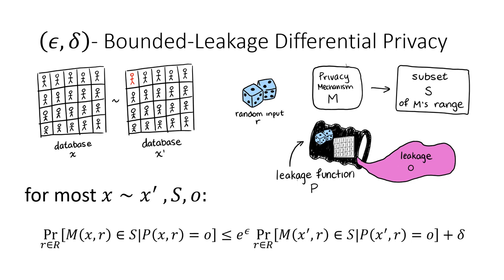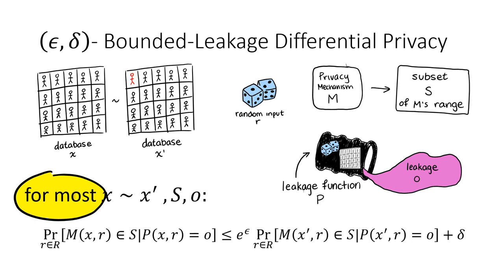We then require that for most pairs of neighboring databases, most subsets S of the range of M, and most leakages O, the probability that M would output some value within subset S given that the leakage was O is going to be similar whether we used database X or its neighbor X prime. Note that it's for most pairs, not all pairs, because we're working with conditional probabilities. If the probability that P outputted some O on a particular database was zero, these probabilities would be undefined. We can think of these situations as places where the leakage is already telling us so much that we don't need to reason about privacy, so we ignore those cases.